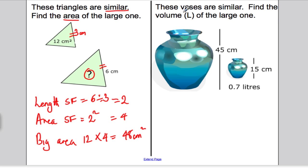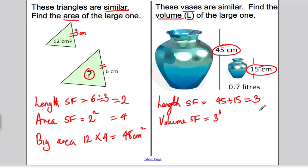The volume of these vases are similar. Here we're doing volume. Find the volume in litres of the larger one. The length scale factor is 45 divided by 15, which is 3, the equivalent lengths. So the volume scale factor must be 3 cubed, which is 27. So the big volume is therefore 0.7 times 27, and you get yourself 18.9 litres. And you're done. That's it.